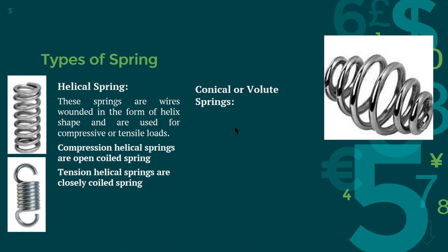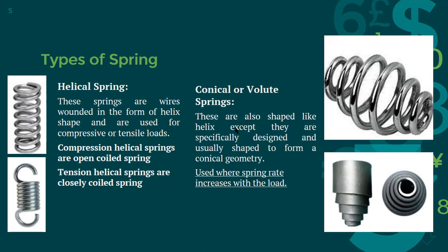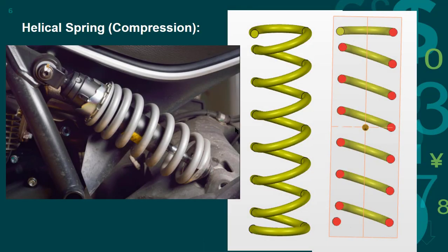Then we have conical or volute springs. These springs are also shaped in the form of a helix, but they are tapered to some extent depending on the application. Volute springs have very specialized applications, which we will discuss later. These springs have a spring rate which increases with the load. Compression helical springs are usually found in the suspension of vehicles.